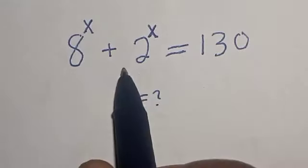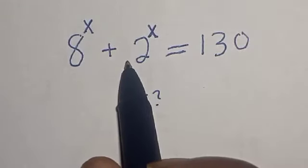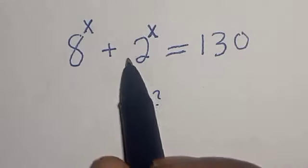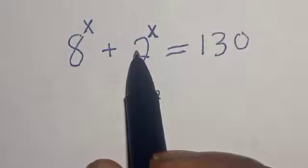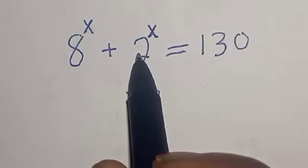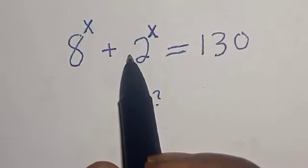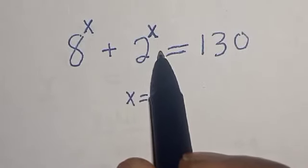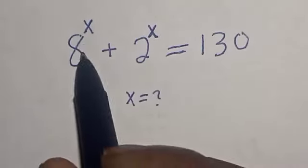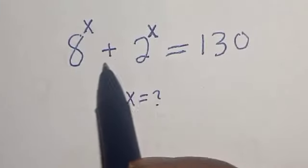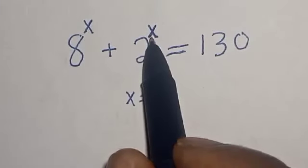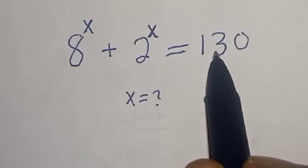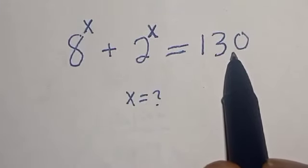Hello, welcome to MathGist. In this class we quickly want to find the value of s from this given olympiad exponential equation: 8 raised to the power s plus 2 to the power of s is equal to 130. Solution.